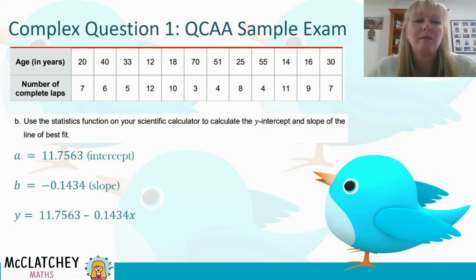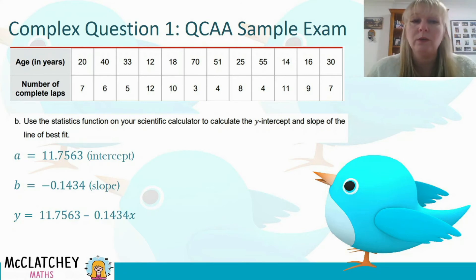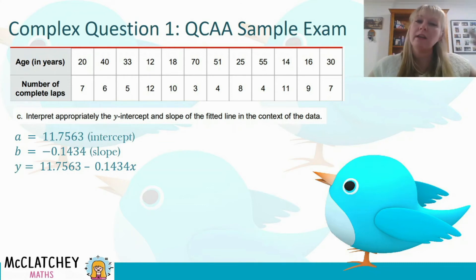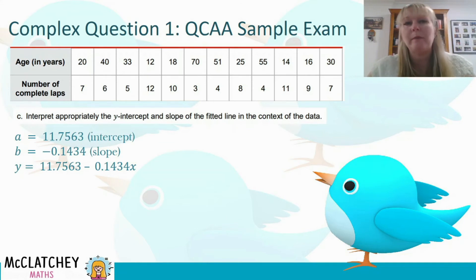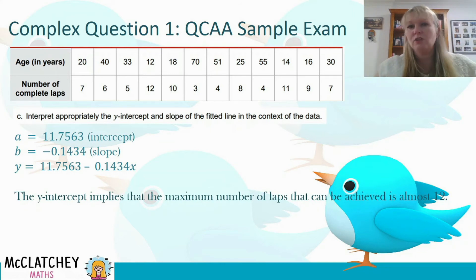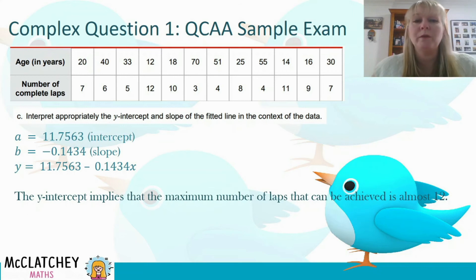We can now state our values for a and b — our intercept and our slope. We weren't actually asked to find the equation of the line here, but I've brought that together to show you how that would look. Part C: we need to appropriately interpret the y-intercept and the slope based on the context of the data — what that means for age and number of laps completed. So firstly, let's think about what the y-intercept means. It's 11.75, so what that's implying is it's the maximum number of laps that anyone could achieve — approximately 12 or 11.76 laps — that's the most someone could achieve based on this model.